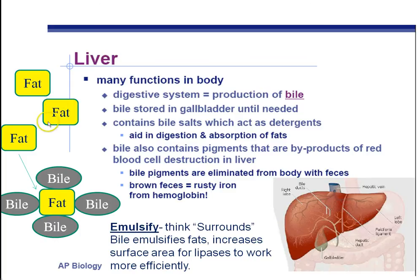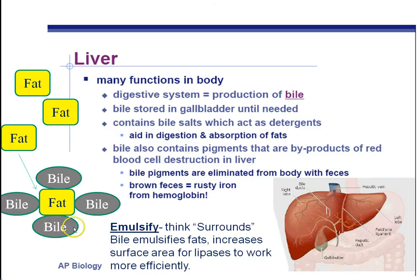Here we have the fat. Maybe you ate some fried chicken or something like that. Your liver makes bile, and your gallbladder stores it until it's needed. So once you eat a fatty meal, the gallbladder secretes bile from the gallbladder and/or the liver right into the small intestine. Then the bile surrounds the fat droplets, which increases surface area for lipases to break it down.